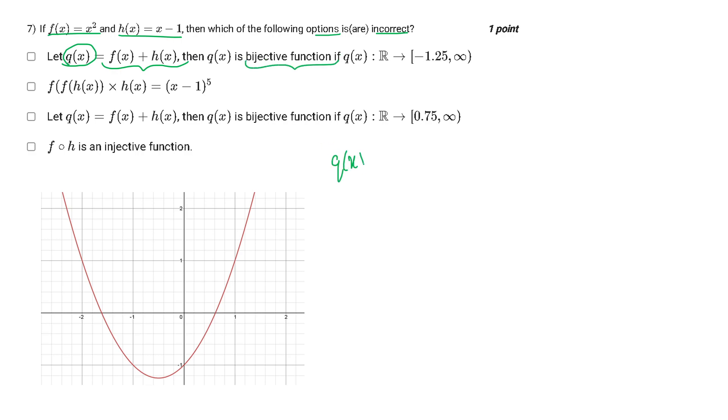So g(x) is f(x) plus h(x). This is basically a quadratic equation which will have a parabolic graph. Since our coefficient of x squared is positive, it will be an upward parabola. Our discriminant, that is b² minus 4ac, comes out to be 5, which is positive. Therefore I will be having two distinct roots.